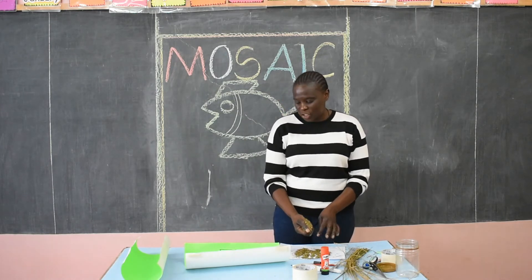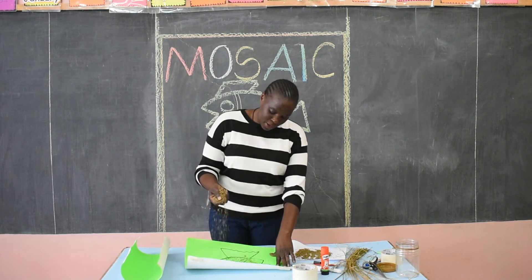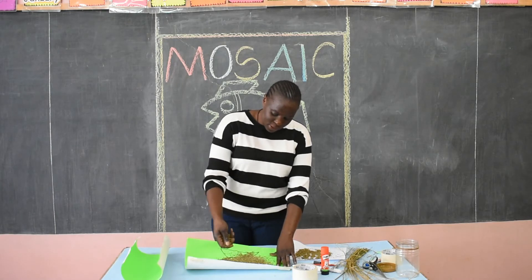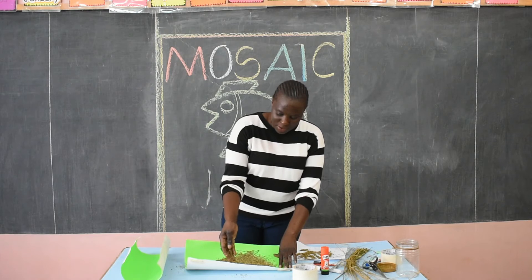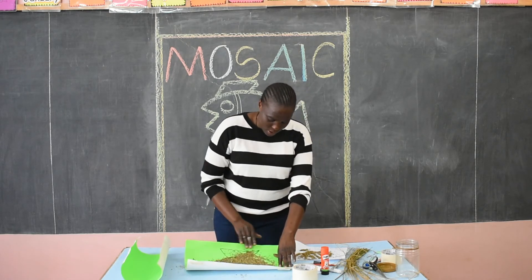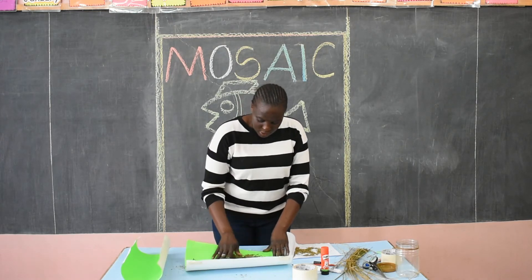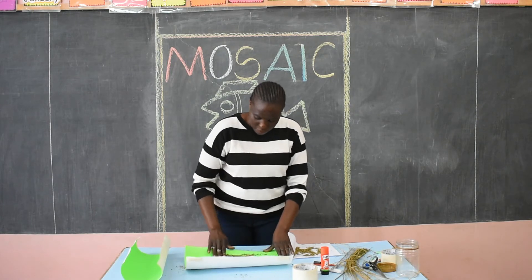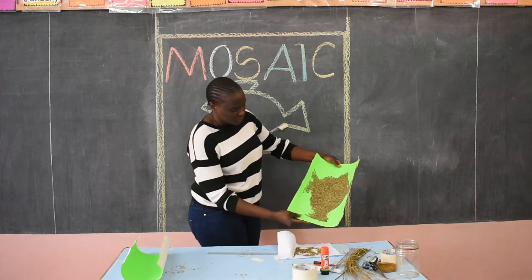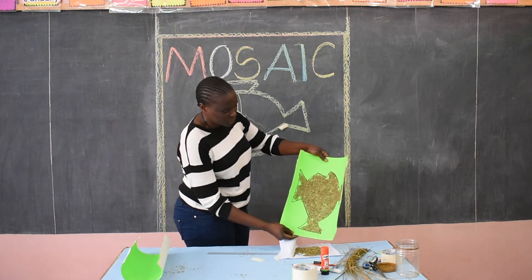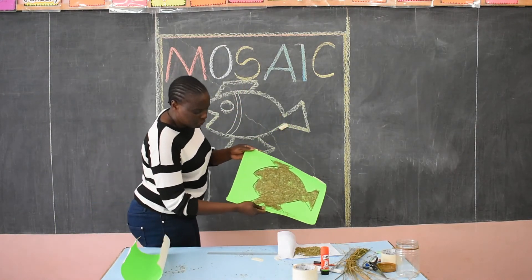I am going to spread the grass on my fish to make my fish more beautiful. The grass is going to stick on the areas where I spread my glue. Continue spreading. Make sure your fish has the pieces of grass. I have done it — then after I have done it, I just remove the excess. Now you can see the piece of work that we have.